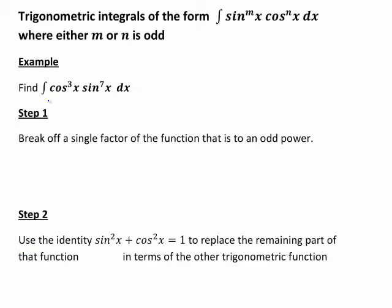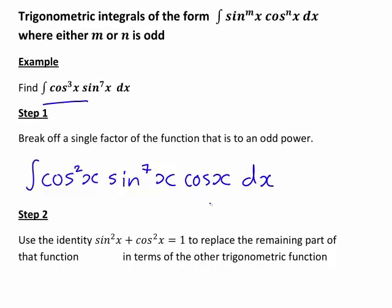So in this case we're going to be rewriting cos cubed x as cos squared x times cos x. But for convenience I'm actually going to put the split off factor cos x at the end of this expression for reasons that will soon become clear.